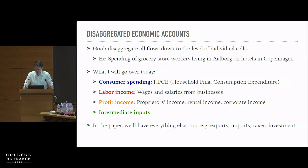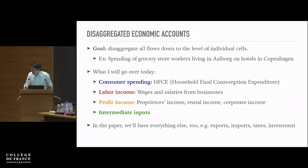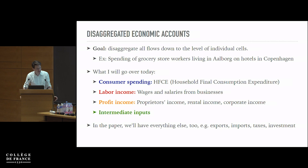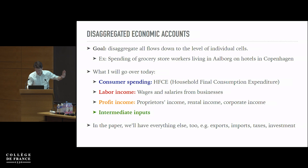The goal is to disaggregate all flows in the national accounts down to the level of individual cells. For example, one thing we want to measure is how much do grocery store workers in Aalborg spend on hotels in Copenhagen — that would be one such bilateral flow. I'm going to give you a glimpse of how we deal with four important flows between households and producers: consumer spending, labor income, profit income, and intermediate input trade.